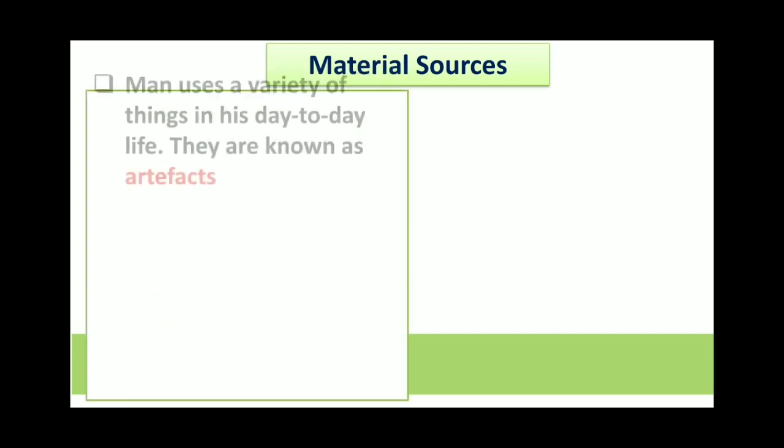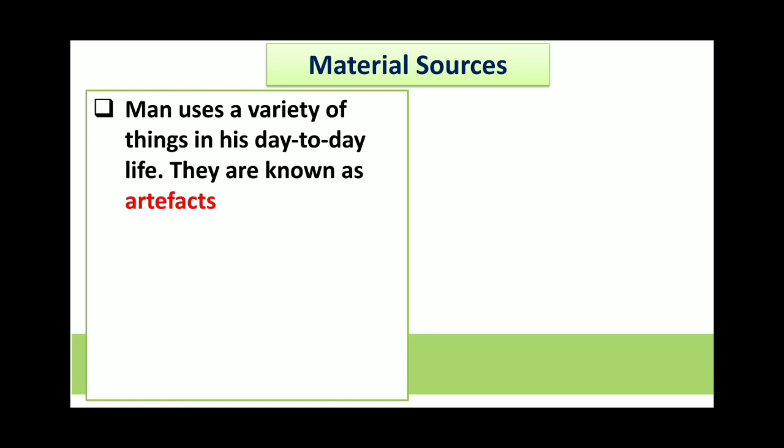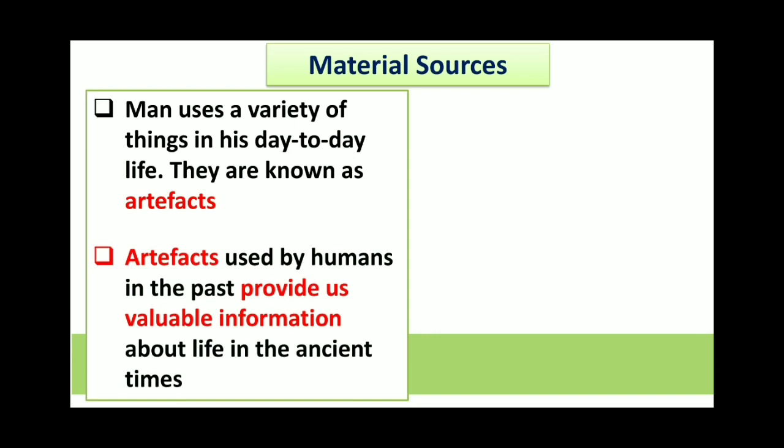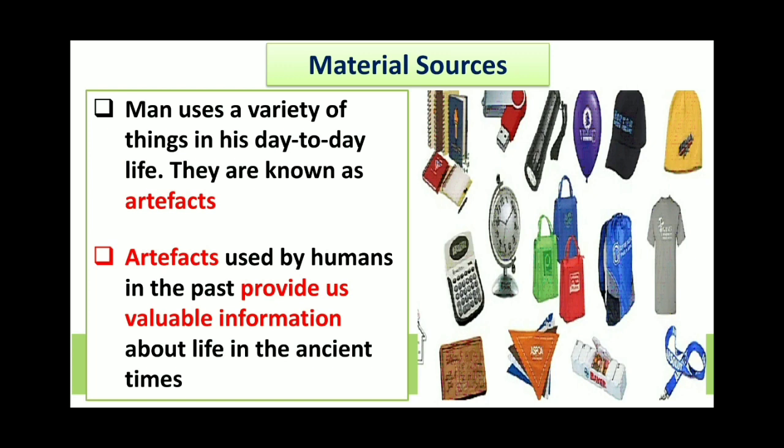Material sources: as we all know, man uses a variety of things in his day-to-day life, which are known as artifacts. Anything which we use to fulfill our needs — like a water bottle, water bag, compass box, or computer — are artifacts. If we talk about our grandparents' period, instead of television there was radio. All these daily-use things and artifacts used by humans in the past provide us valuable information about life in ancient times.